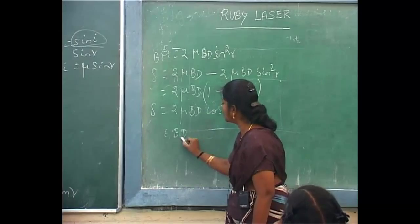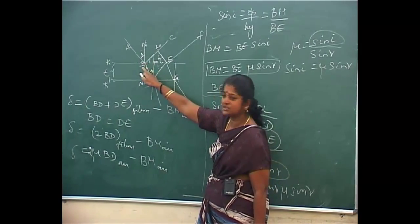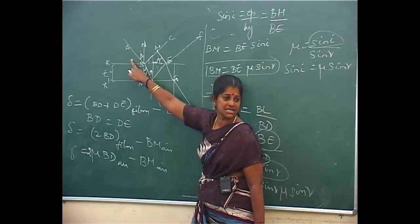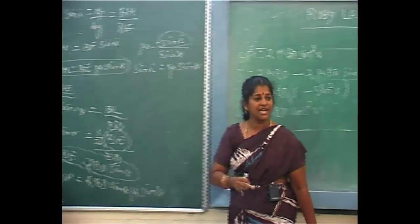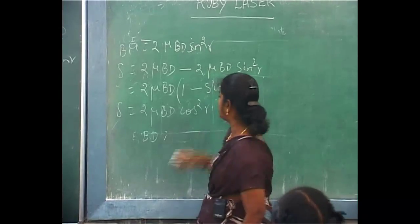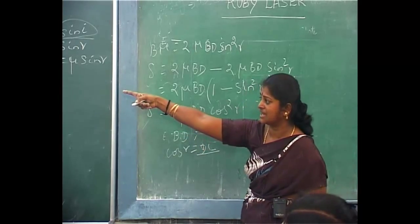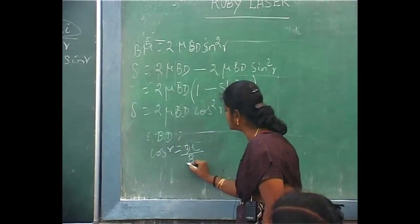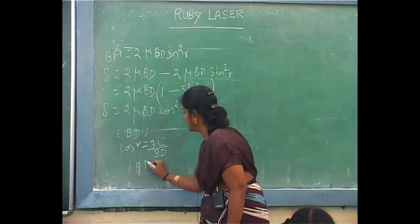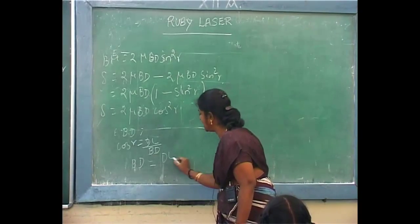Now one more alphabet to find: BD. BD is a hypotenuse side. We know the adjacent side — it is equal to the thickness. So if I use cos R, I can find the actual value of BD. Cos R is equal to DL (the adjacent side) divided by BD (the hypotenuse side). So BD is equal to DL by cos R. This you will substitute for delta.